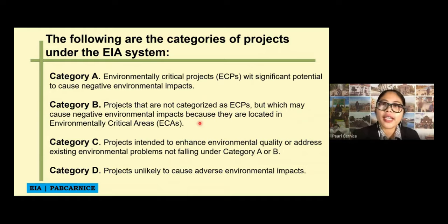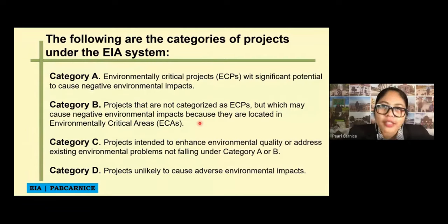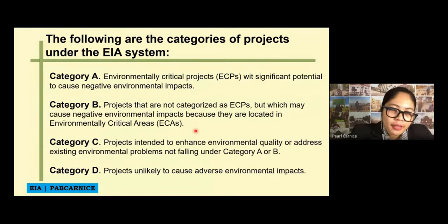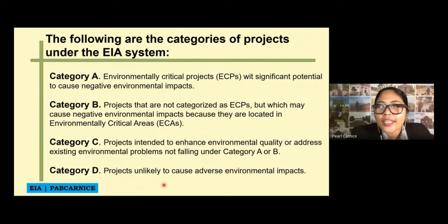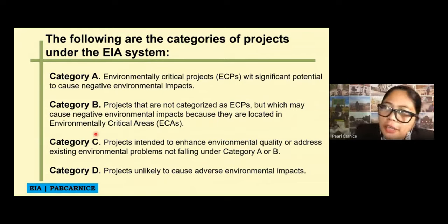Category C covers projects intended to enhance environmental quality or address existing environmental problems, and which do not fall under Category A and B. Category D covers projects that are unlikely to have adverse environmental impacts. So: Category A — Environmental Critical Projects; Category B — Environmentally Critical Areas.